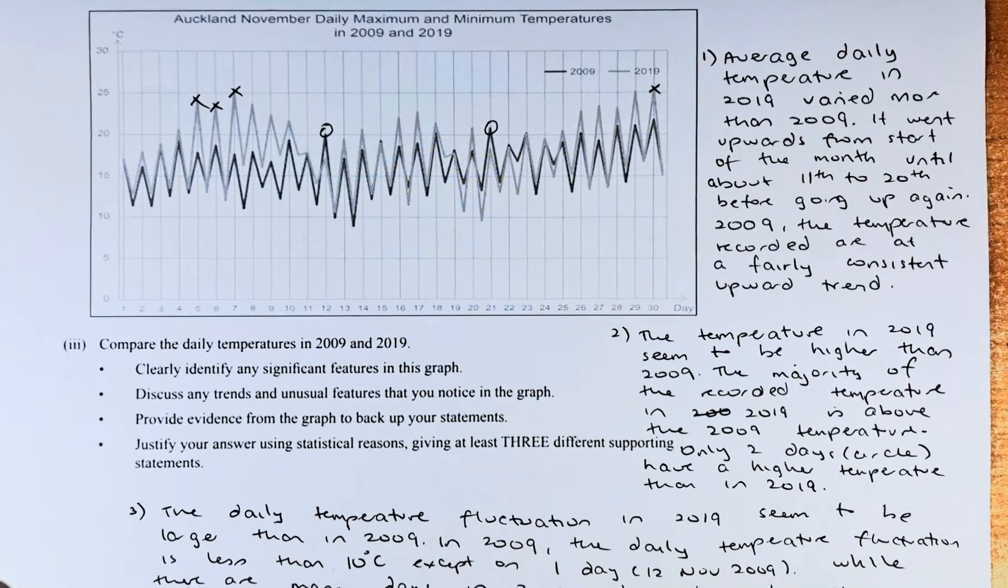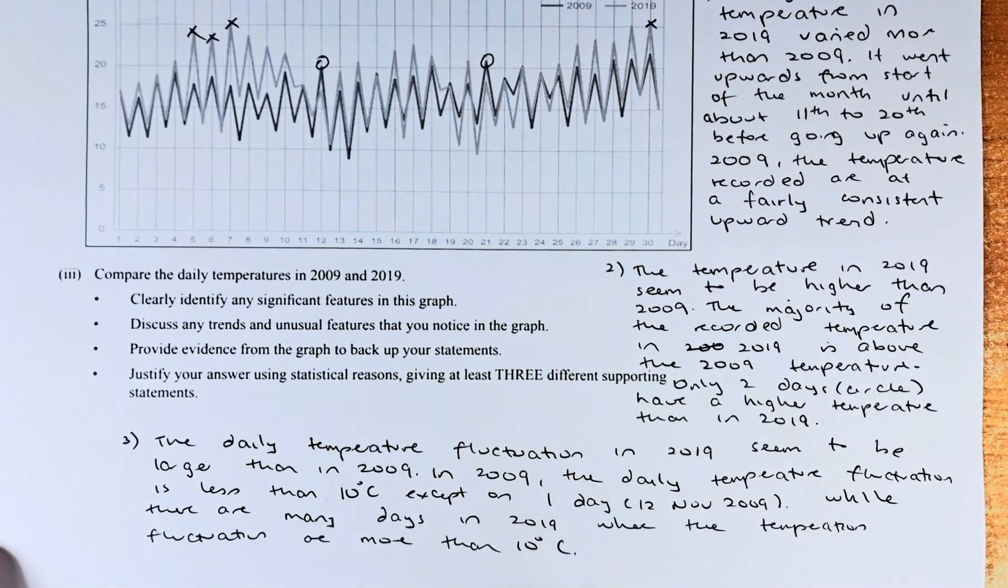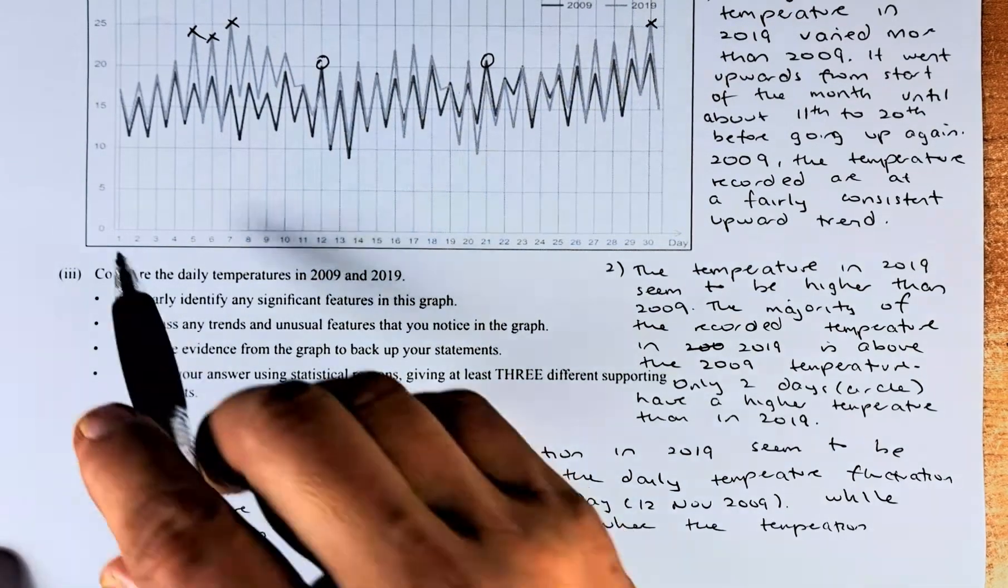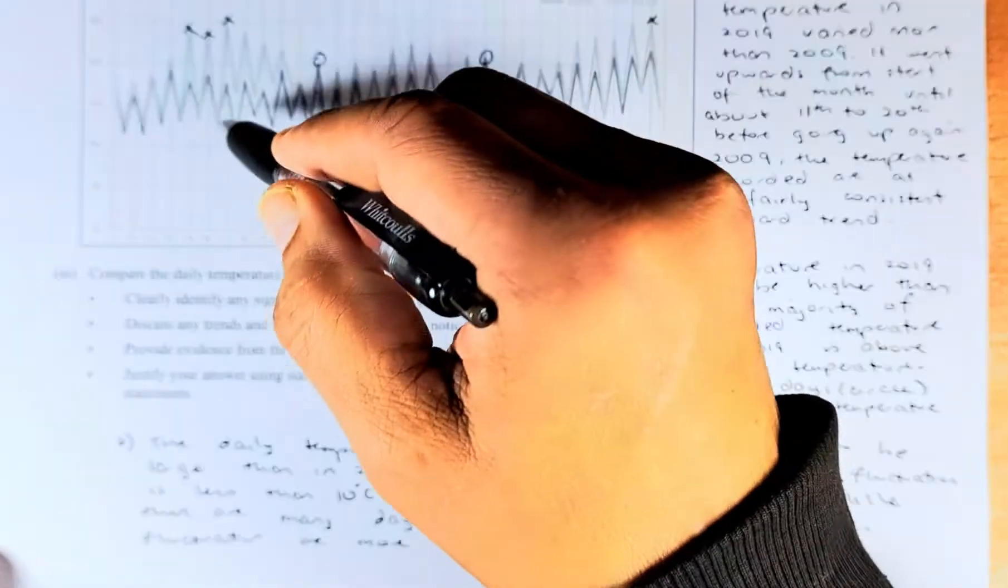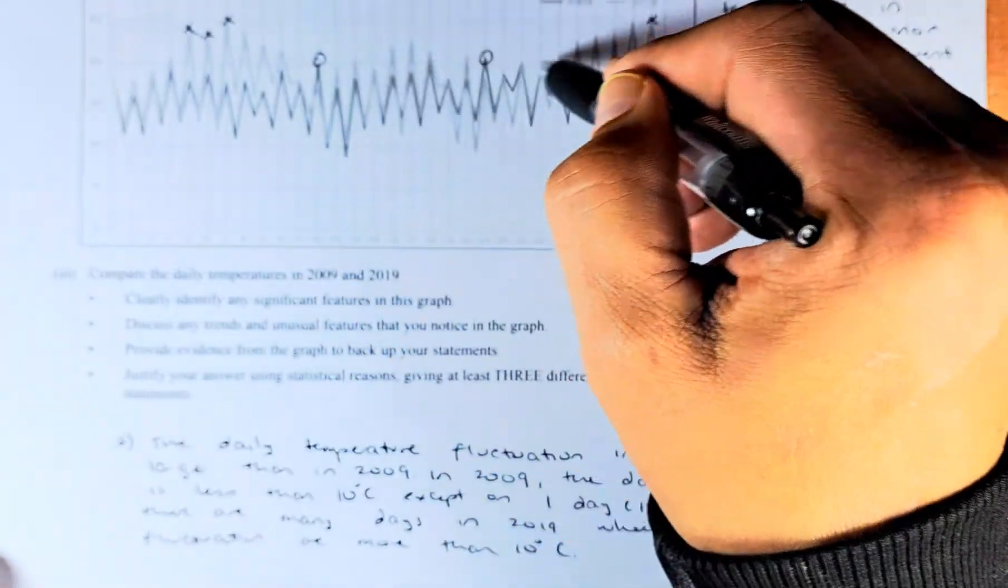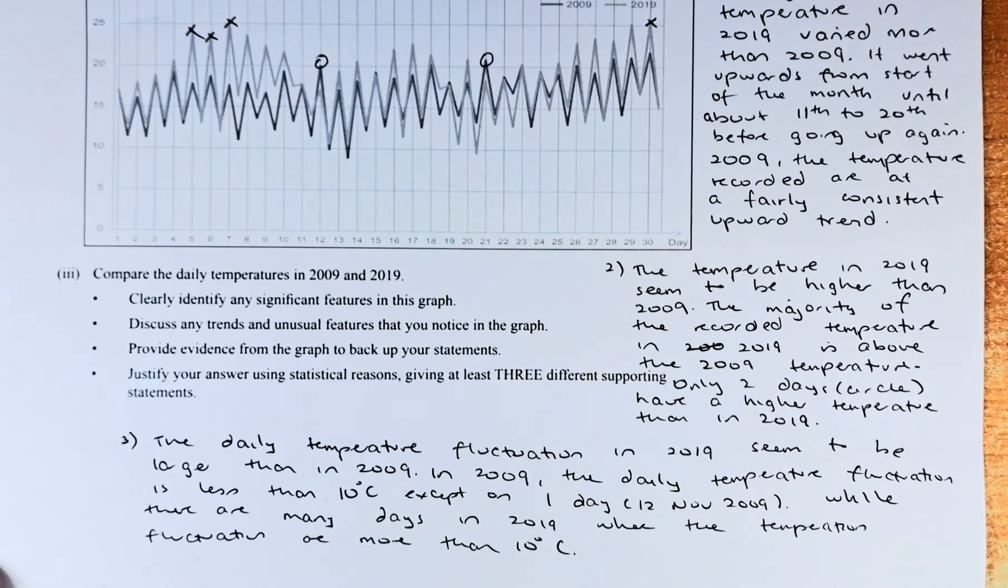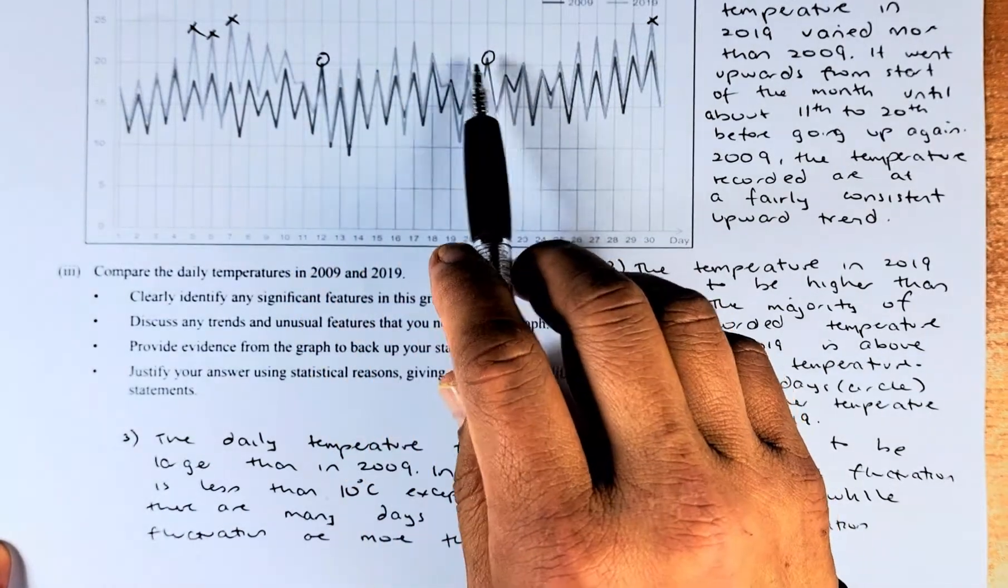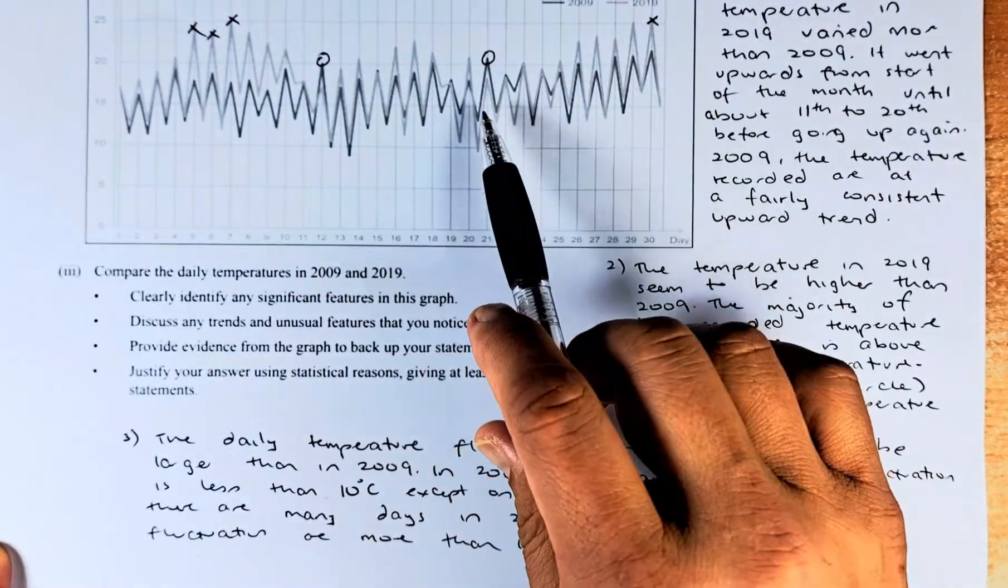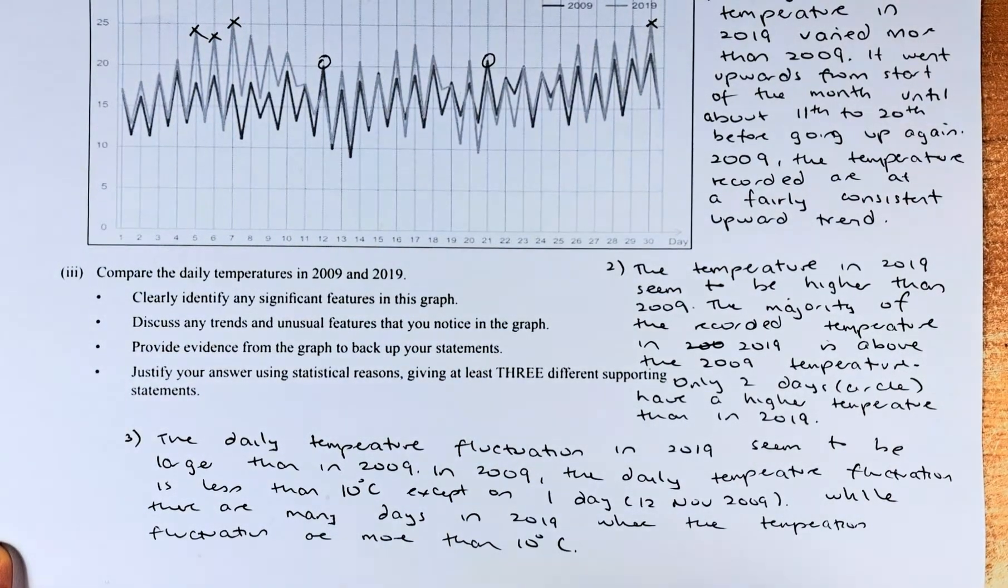Part 2. The temperature in 2019 seems to be higher than 2009. So you can look at the graph, the points at the lighter line, the 2019, is higher than the points in the darker line. So there is going to be a global warming. So it tends to be higher than in 2009. The majority of the recorded temperatures in 2019 is above the 2009 temperature. Only 2 days, the one here and here, only 2 days out of the 30 days where the darker line is higher than the lighter line.